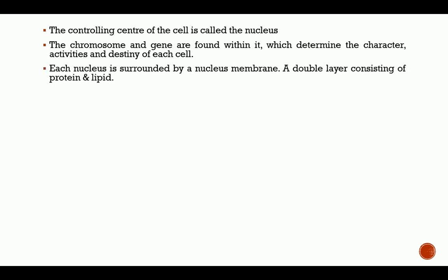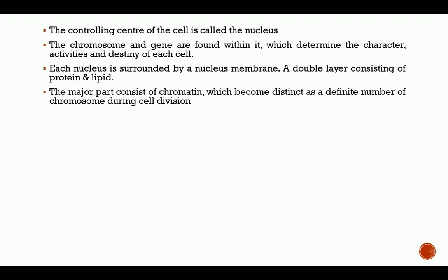Each nucleus is surrounded by a nuclear membrane, which is a double layer consisting of protein and lipid, similar to the plasma membrane. The major parts consist of chromatin, which becomes distinct as a definite number of chromosomes during cell division.